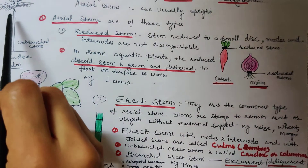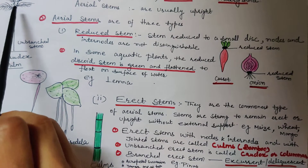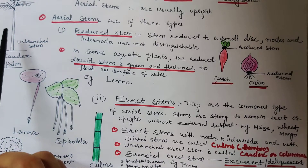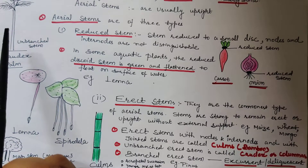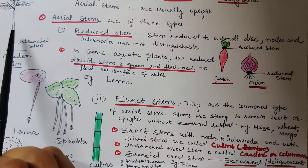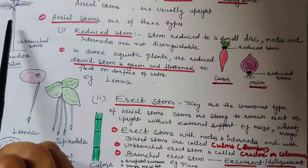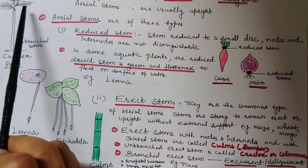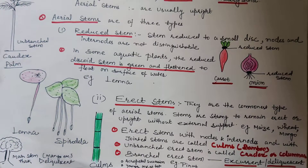An unbranched erect stem — if there is no branch on a stem and it is erect — is called caudex or columnar. Examples are coconut and palm tree, where the main stem remains unbranched and bears a crown of leaves at the top.